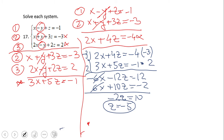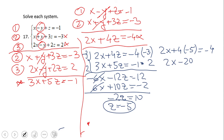Now we can go find x. Going back to the first equation: 2x plus 4 times negative five equals negative four, giving us 2x minus 20 equals negative four. So 2x equals 16, which gives us x equals eight.